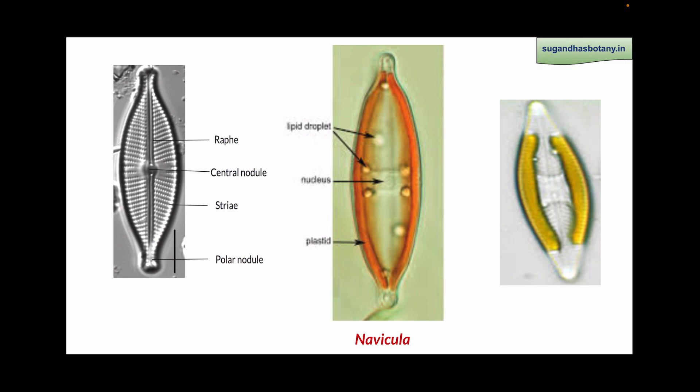When we see the structure of Navicula, externally it is boat-like in shape. There is a central raphe, a central nodule, two polar nodules, and wall markings known as striae. Internally the cell has a large vacuole. In the center there is a cytoplasmic bridge in which a single nucleus is found. There are two large plate-like parietal chromatophores, and these chromatophores appear golden brown in color due to the presence of the dominant pigment fucoxanthin. Storage product is present in the form of lipid droplets.